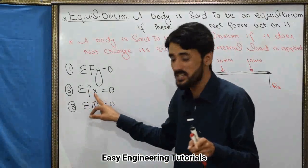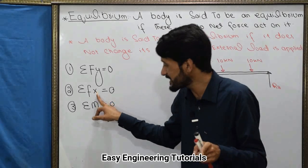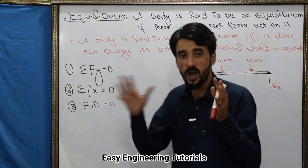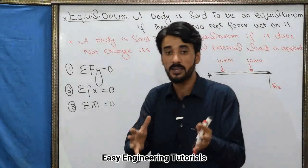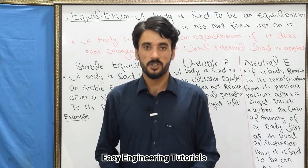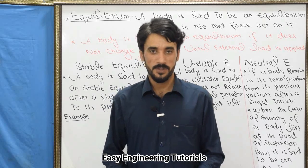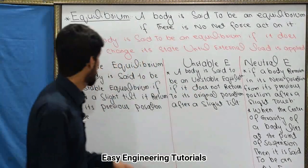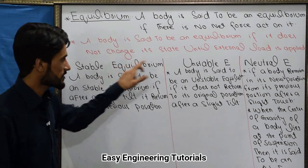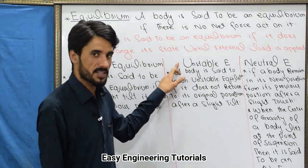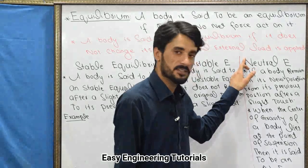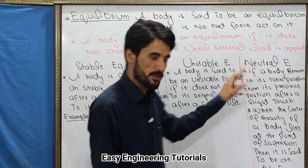To summarize: summation of all forces along the Y-axis must be equal to zero, summation of forces along the X-axis must be equal to zero, and summation of all moments must be equal to zero. Now, there are three states of equilibrium: the first is stable equilibrium, the second is unstable equilibrium, and the third is neutral equilibrium.